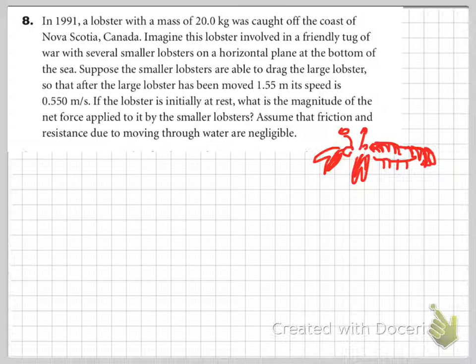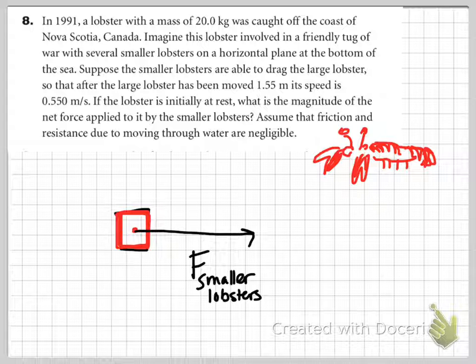We've got a couple of smaller lobsters tugging this gigantic 20-kilogram lobster. So what we're looking at in terms of a force diagram is this, where the red square represents the mega lobster, and the force exerted here is the force of the smaller lobsters.